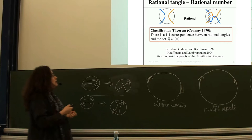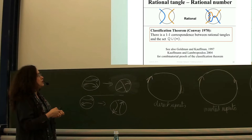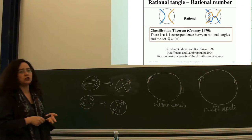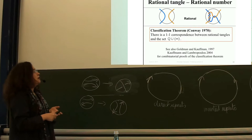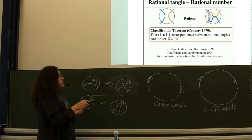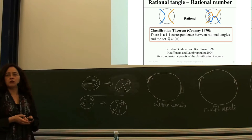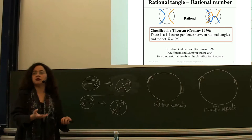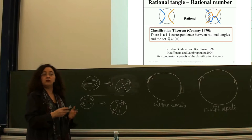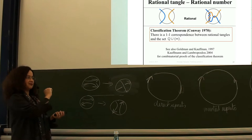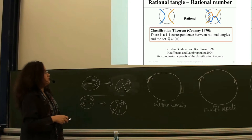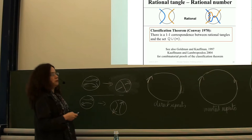The proof for the classification theorem uses covering spaces and relies on the classification of rational knots, which relies heavily on the classification of lens spaces. I recommend the proof by Goldman and Kauffman from 1997, and Kauffman and Lambropoulou have other proofs from 2004 that are combinatorial in nature and don't require covering spaces. They're very beautiful and constructive. If you decide to teach this to an undergraduate class, that's the way to go — students can manage it. One side of the proof is difficult for students, but the other is very constructive and amenable for teaching.